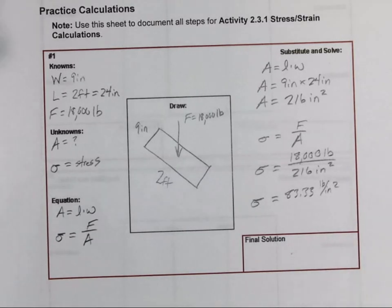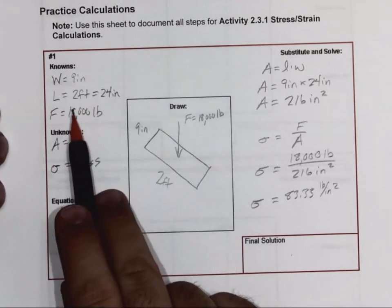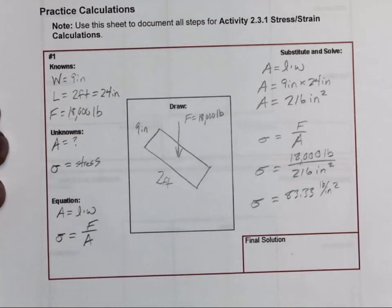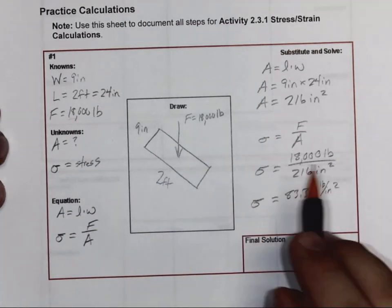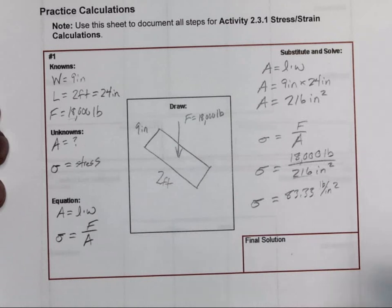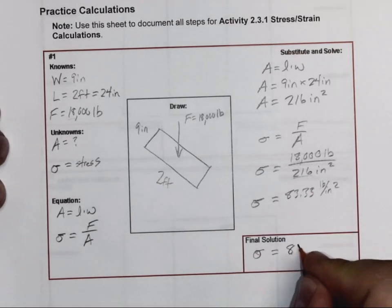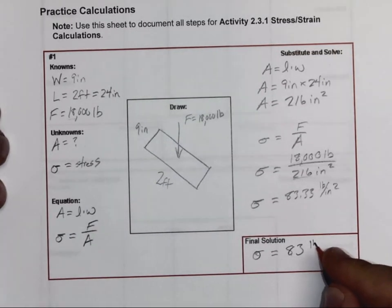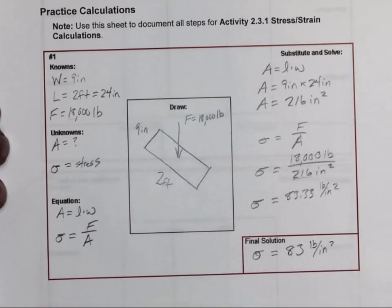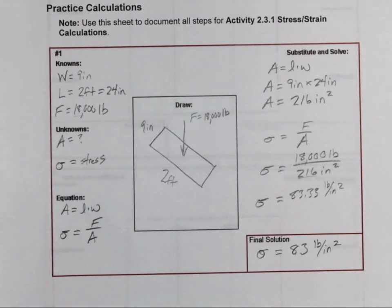But as far as my final solution, we want to keep in mind what our significant figures are. So in this case, in any one of these problems, the most amount of significant figures I have is going down to two. My force has got two significant figures. That's the lowest amount. So in this case, my stress, I'm going to go ahead and keep this at 83 pounds per square inch. And that finishes out number one.